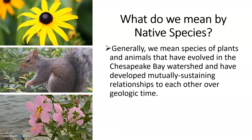Generally, native species are plants and animals that have evolved in the Chesapeake Bay watershed and have developed mutually sustaining relationships to each other over geologic time. If you remember from sixth grade, mutualism is where two organisms benefit from their relationship.